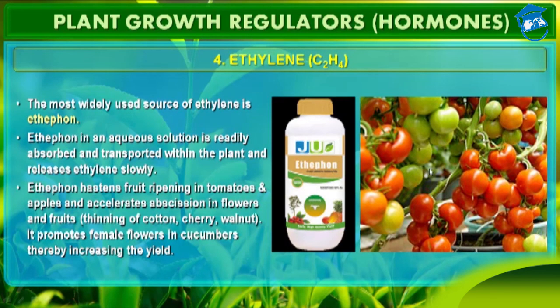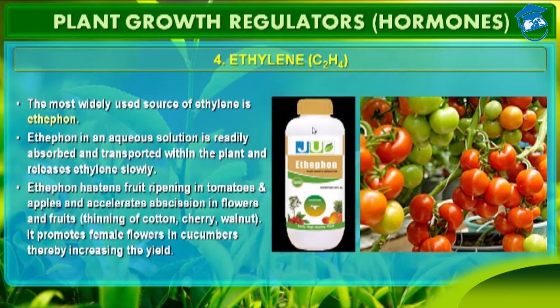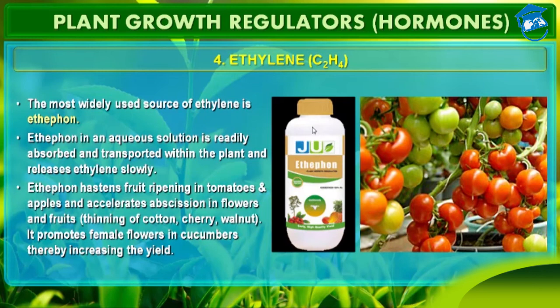Ethephon hastens or promotes fruit ripening in tomato and apple. It accelerates abscission in flowers and fruits by thinning of cotton, cherry, and walnut. Ethephon also promotes female flowers in cucumber, thereby increasing the yield — more female flowers means more yield. Ethephon is an aqueous solution readily absorbed and transported within the plant, releasing ethylene slowly. Horticulturists inhibit leaf drooping in ornamental plants by removing ethylene from greenhouses using fans and ventilation.